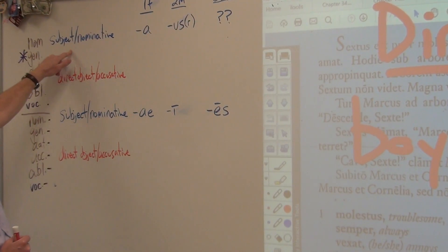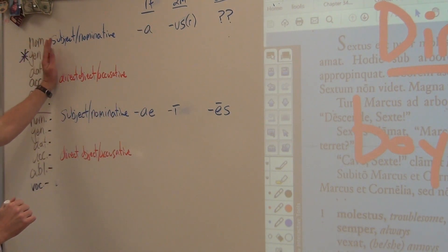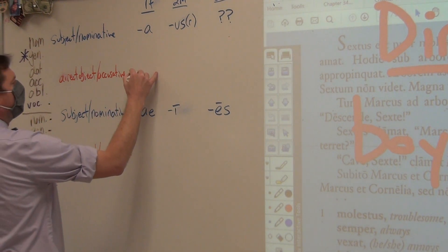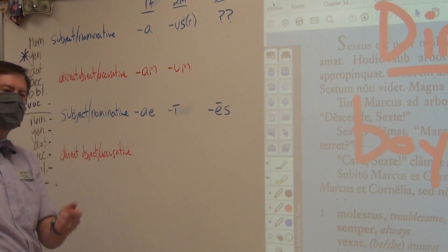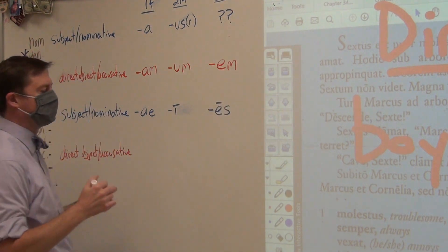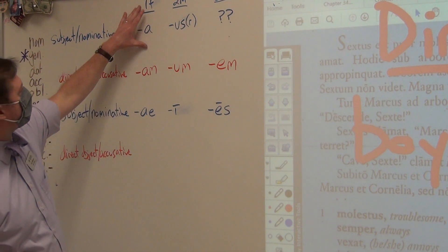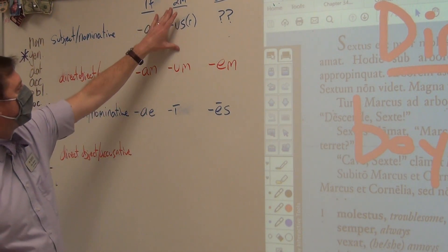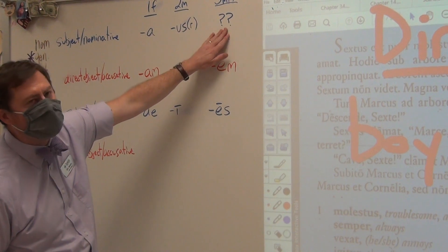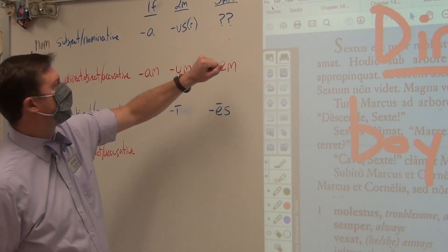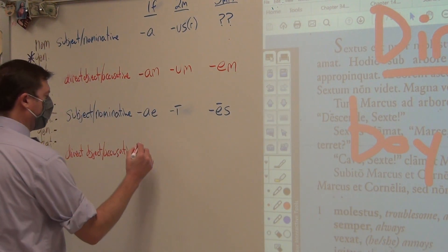Nominative is the subject form; accusative is the direct object form. In the singular, if your noun ends with -am, it's accusative direct object. -um, it's accusative direct object. And -em, accusative direct object. This corresponds with the three kinds of nouns that exist in Latin: first declension nouns with first declension endings, second declension nouns with second declension endings, and third declension nouns with third declension endings. Note that in the nominative subject, there are question marks because there is no set ending — it's just whatever the word looks like when we encounter it.